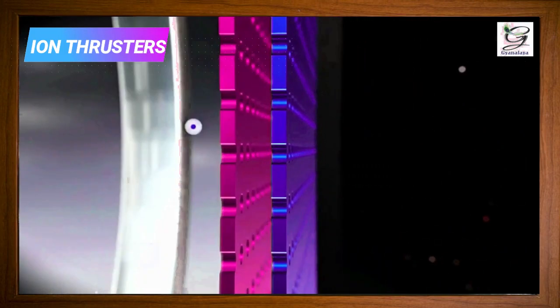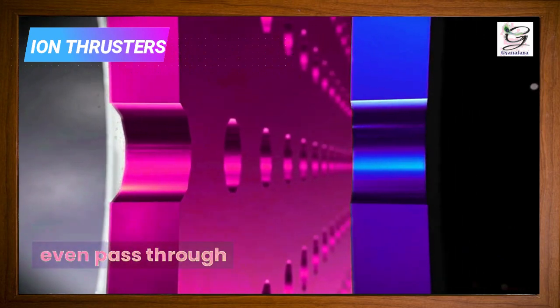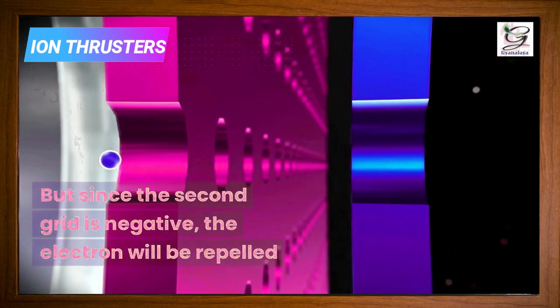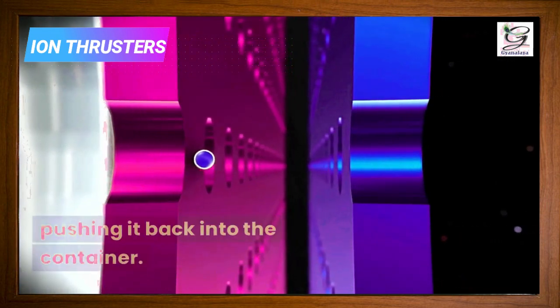If we analyze the behavior of an electron, it will be attracted to the positively charged inner grid, and may even pass through due to the pressure inside the container. But since the second grid is negative, the electron will be repelled, pushing it back into the container.